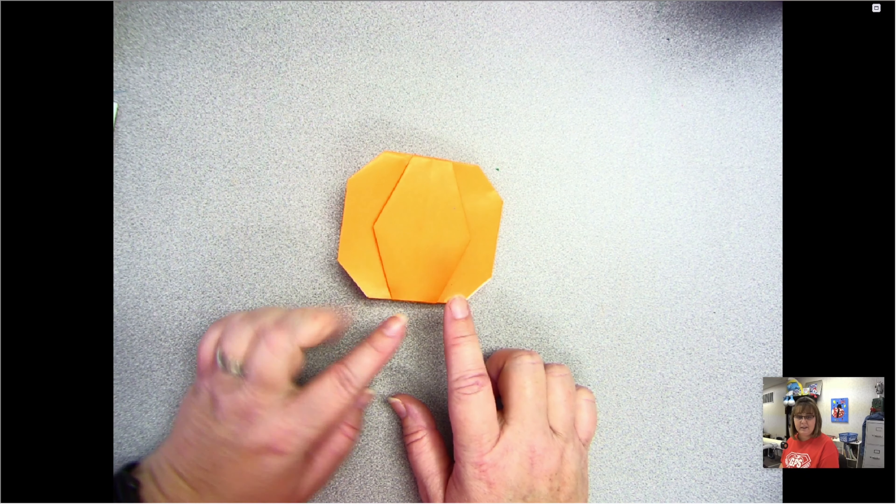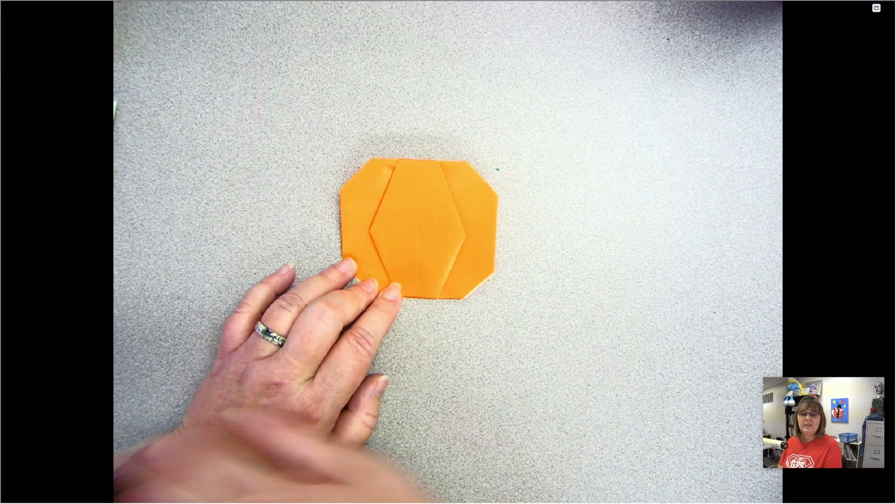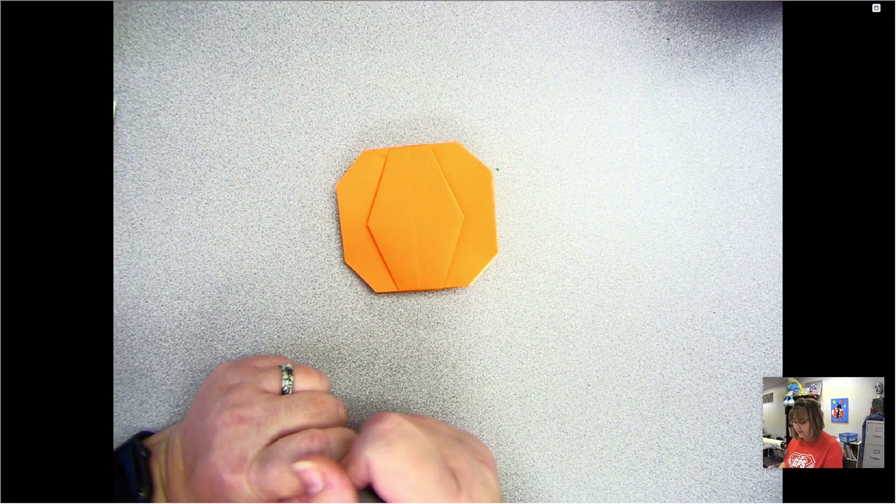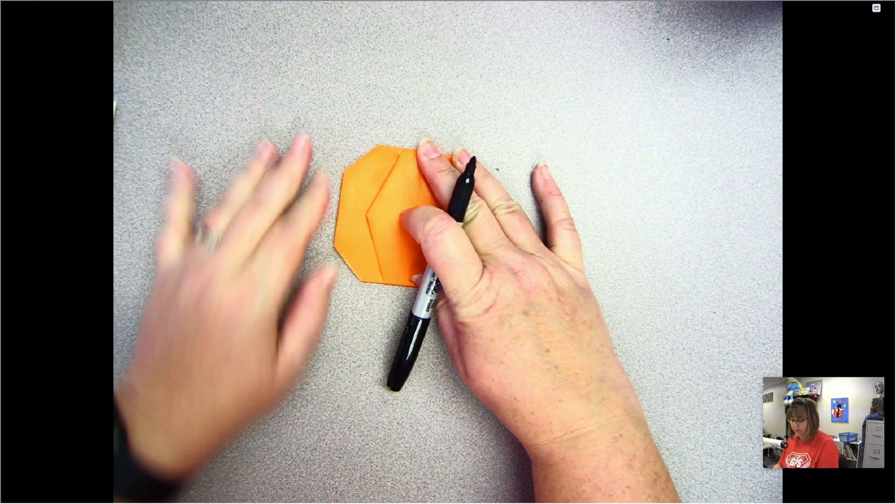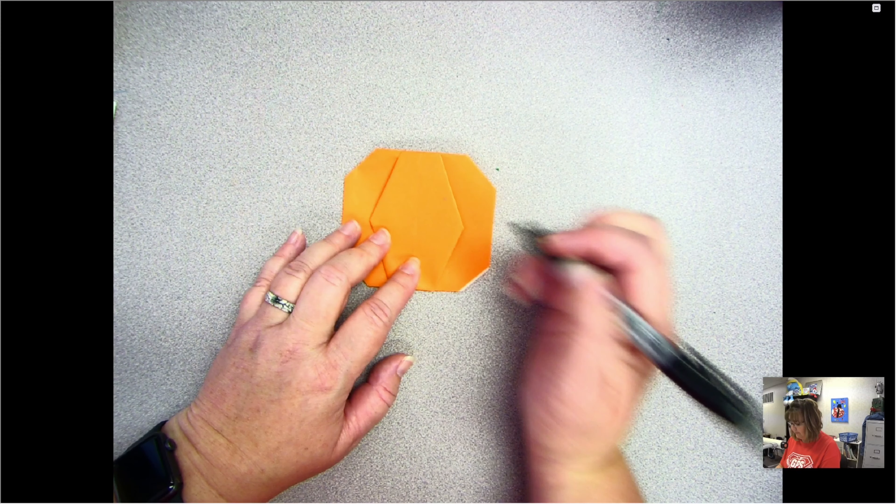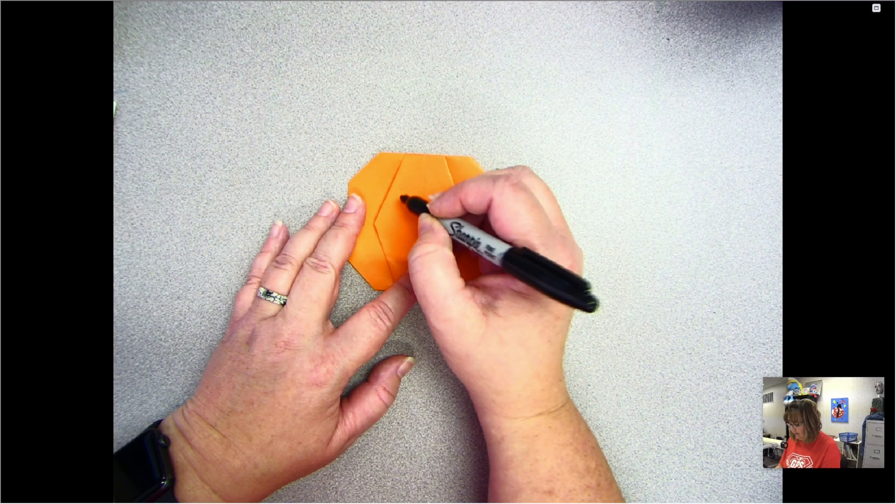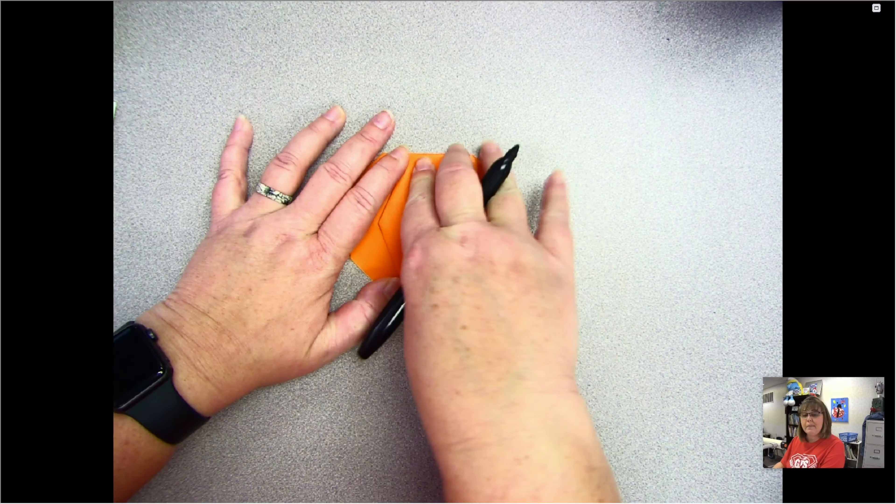And I have my pumpkin. Now you can decorate your pumpkin. Once you get your pumpkin done, you can decorate it. You can put a jack-o-lantern face on it, maybe you want to cut out a green leaf to go on top. You can be very creative.